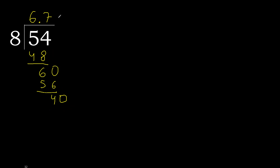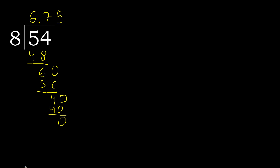40. 8 multiplied by 5 is 40, which is not greater. Subtract: 0. Therefore finished. 54 divided by 8, and 8 is here.